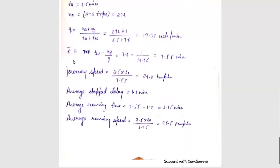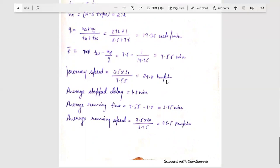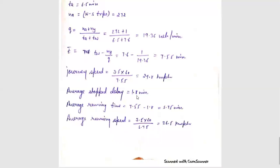For the south-to-north average journey time: T-bar = TW minus NY upon Q, giving 7.55 minutes. Average journey speed = 3.5 / 7.55 × 60 = 27.8 kmph. The average stop delay is 1.8 minutes, so average running time = 7.55 minus 1.8 = 5.75 minutes. Average running speed = 3.5 / 5.75 × 60 = 36.5 kmph.